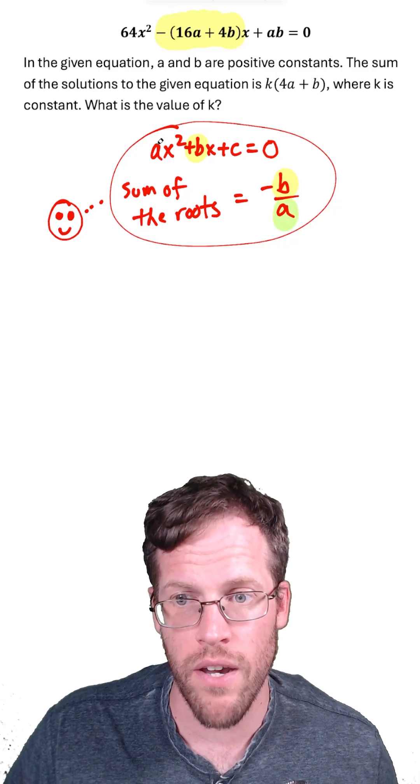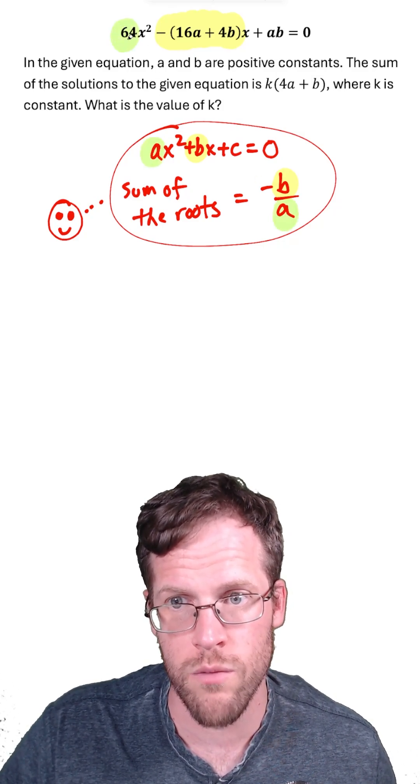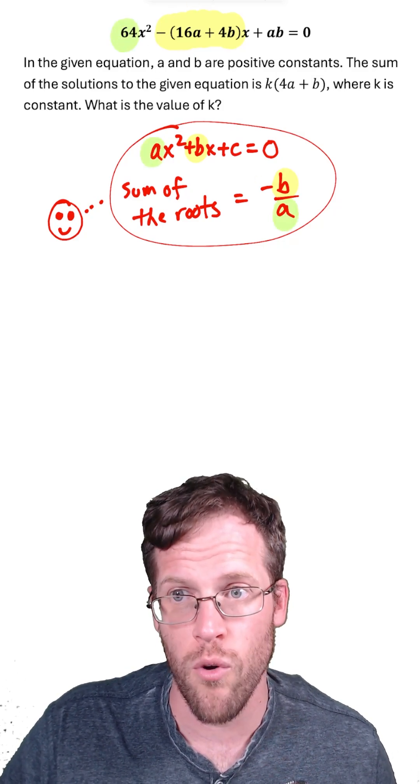And then next, we could look at the a value, which is the coefficient of x squared, which would be the coefficient 64 in the given equation.